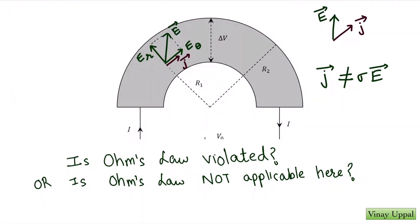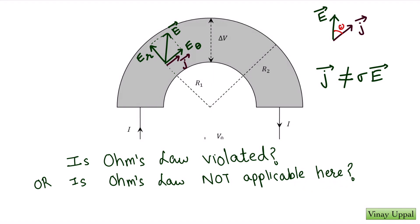Looking at the diagram: I have a tangential electric field driving the tangential current, and a radially outward electric field. The resultant net electric field has some angle between it and the current density — clearly in contradiction to Ohm's Law. So is Ohm's Law violated here, or is it simply not applicable? Let us answer this question.